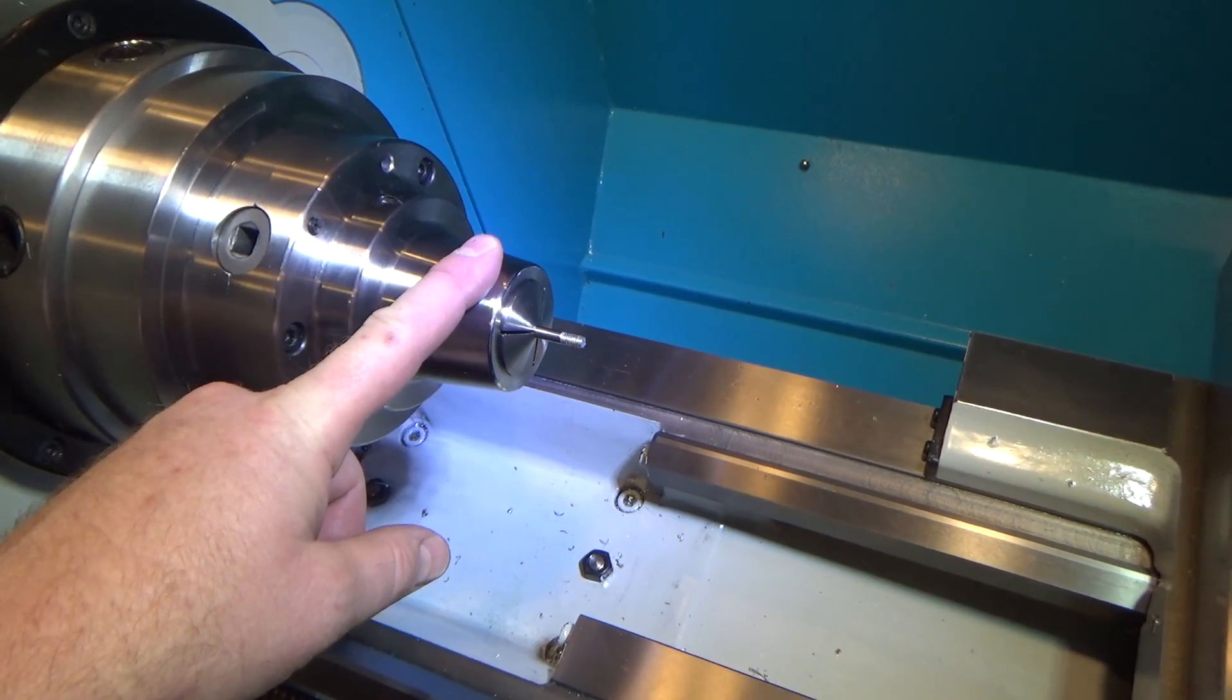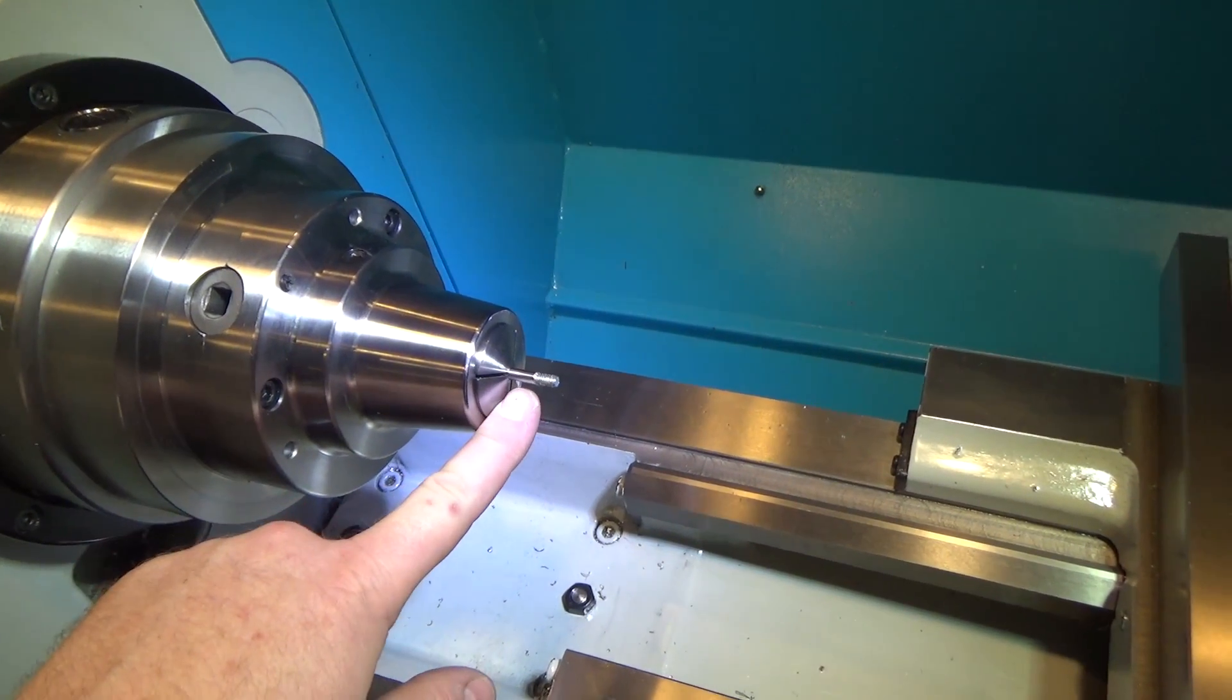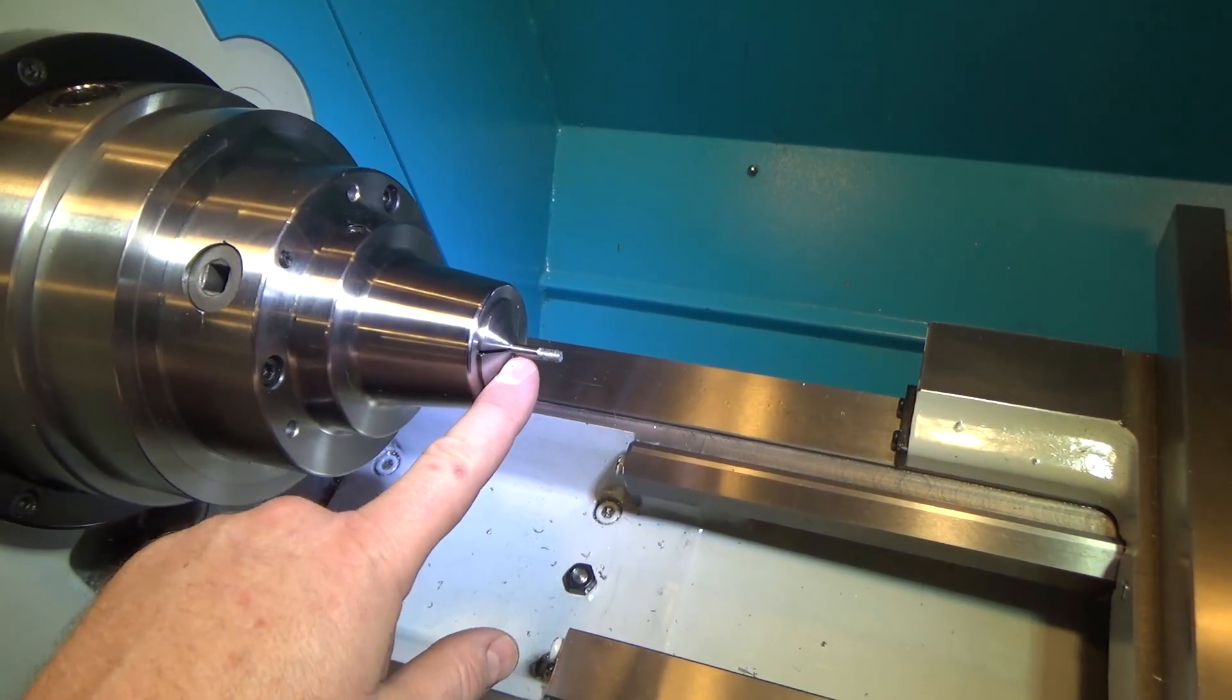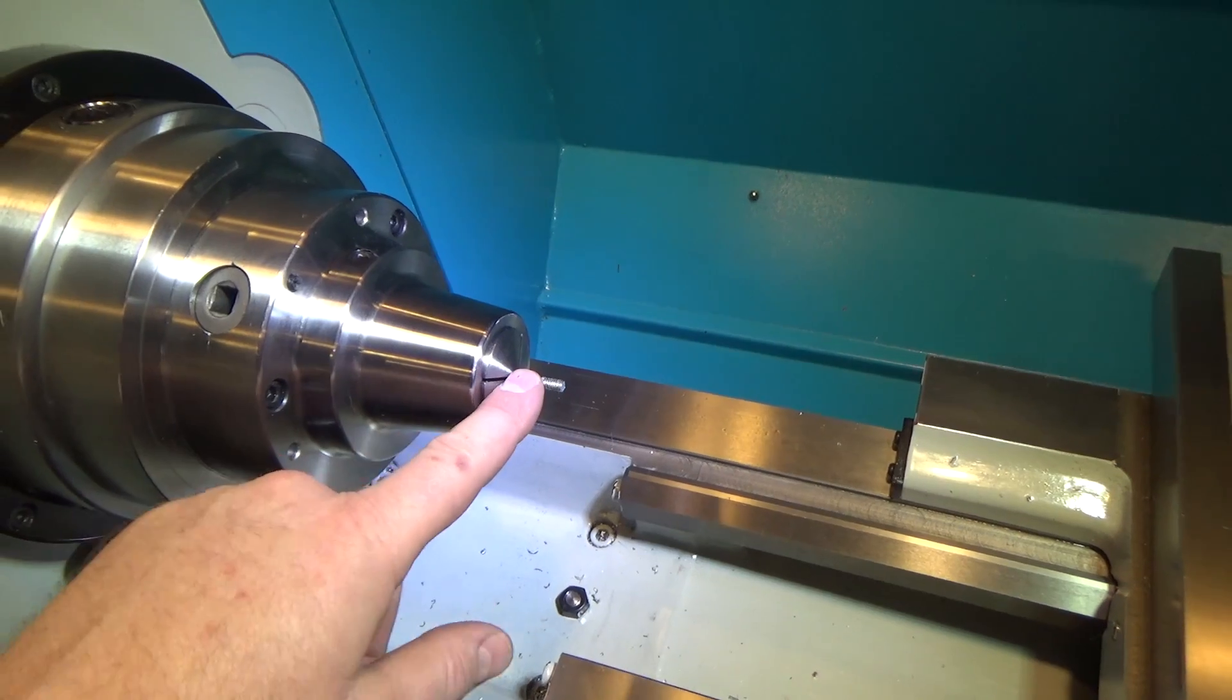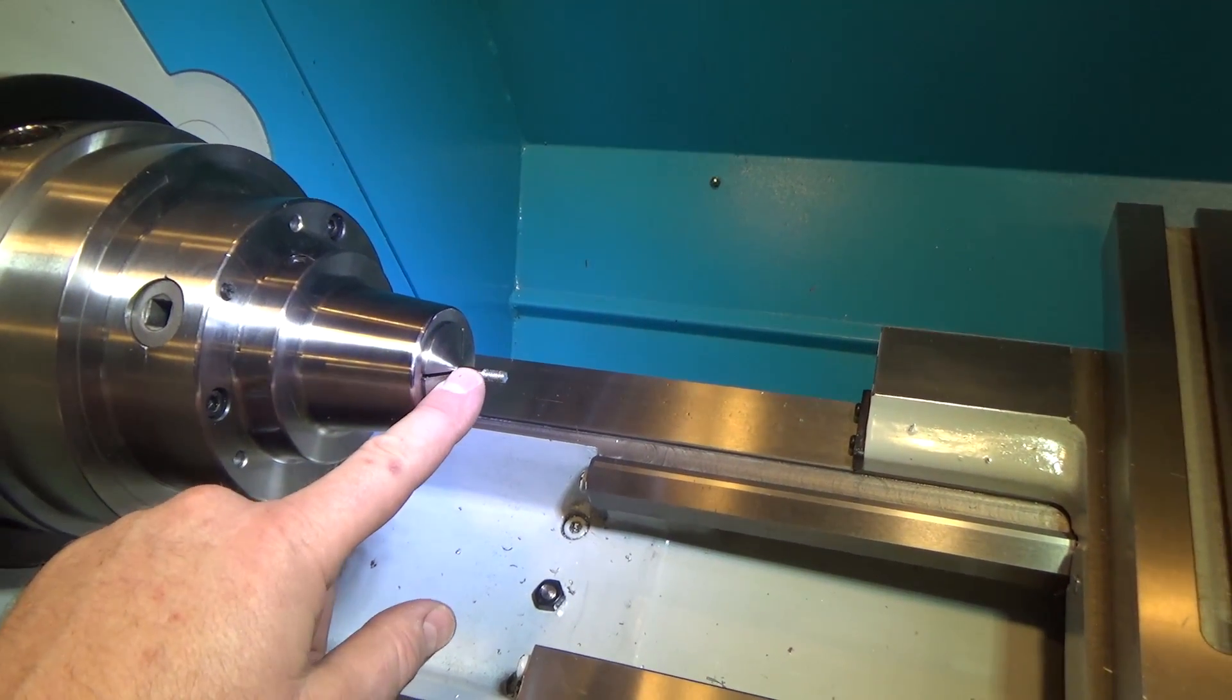So this is 1032 tool steel 3/16 inch stock. They sell it in 3 foot lengths and I've already taken the liberty of tapping with 1032 threads off camera. I'm going to chamfer this end a little bit and turn it around and turn the point on it. This is the point of the tap follower.